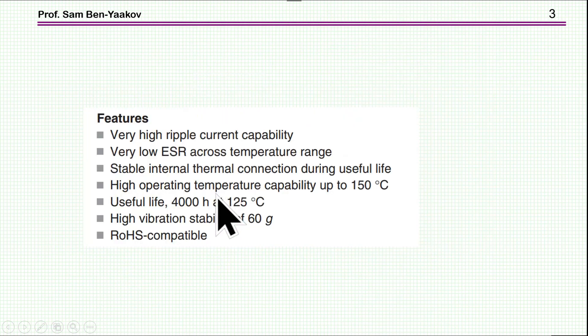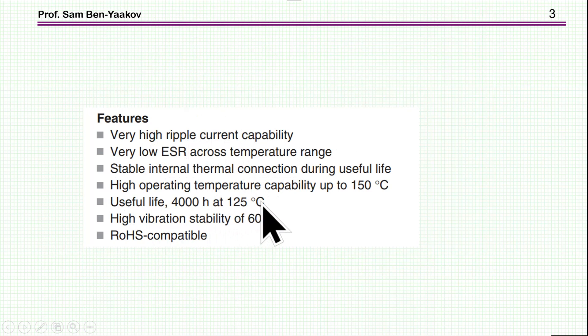In datasheets you find statements like very high ripple current and useful life at 125 degrees. Many times you'd like to know the combination of these — that is, for a given temperature how much ripple current can you pass, or for a given ripple current at a given temperature, what will be the lifetime. This is the subject matter of this presentation.